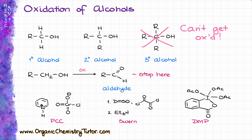The most common reagents that you are going to see for the oxidation of primary alcohols to aldehydes are going to be something like PCC or PDC, the Swern oxidation, which is a two-step process, or Dess-Martin periodinane. These are the most commonly taught reagents in a sophomore course, so you definitely need to know PCC and Swern, and maybe DMP as well if your instructor has covered that. For our purposes, they are essentially interchangeable, so it doesn't matter which one you choose.